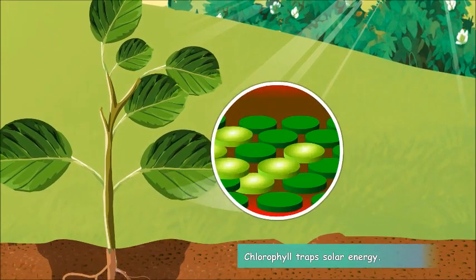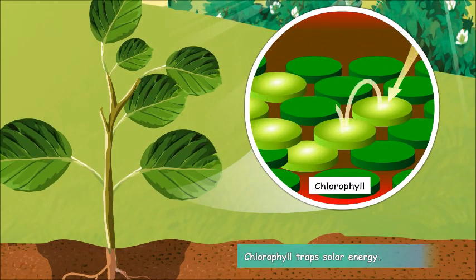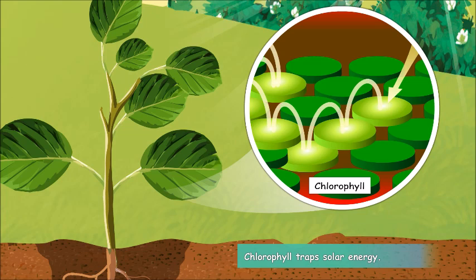The third ingredient, that is sunlight, is trapped by chlorophyll. Chlorophyll is a special substance present on the upper surface of leaves.